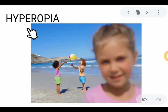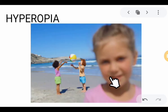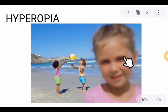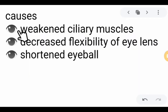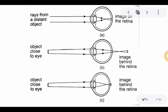The next type of visual defect is hyperopia — the inability to focus on nearby objects. This is the opposite of myopia. In this case, images near to you appear blurry, while distant objects are very clear. The causes include weakened ciliary muscles, decreased flexibility of the eye lens, and a shortened eyeball — the opposite of the elongated eyeball in myopia. These are the reasons the lens can no longer assume the highly convex shape required to view nearby objects.